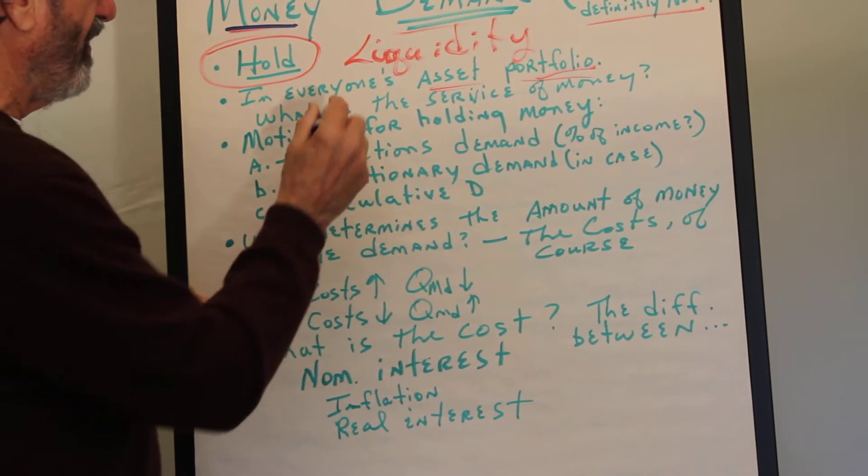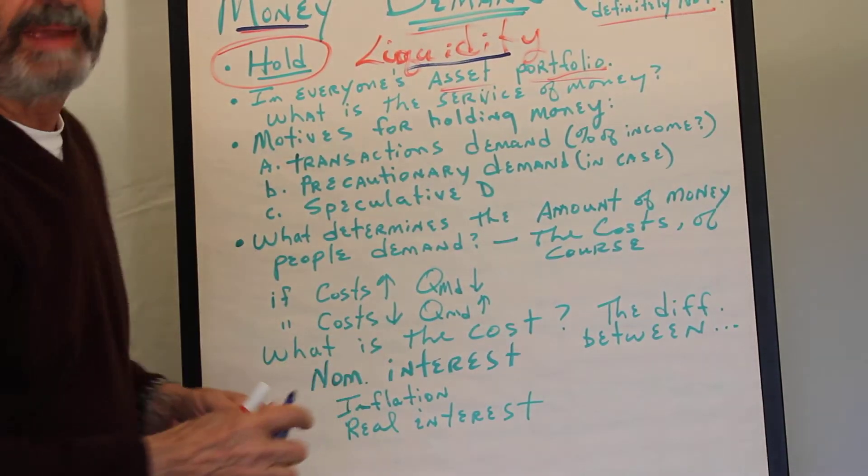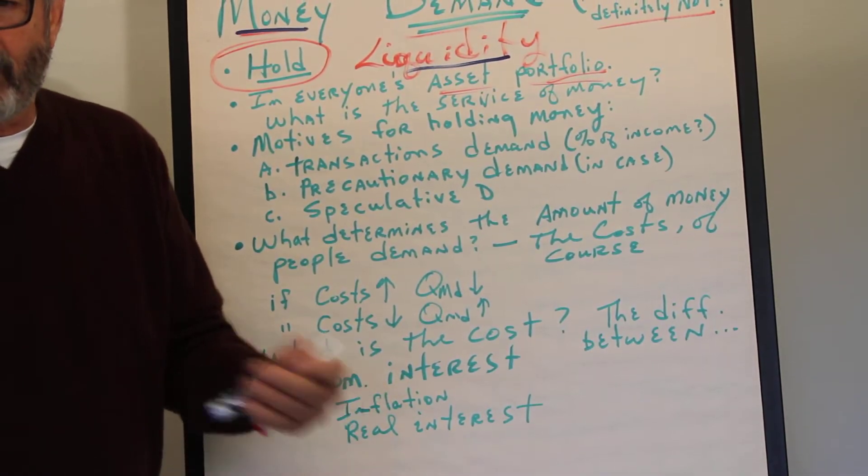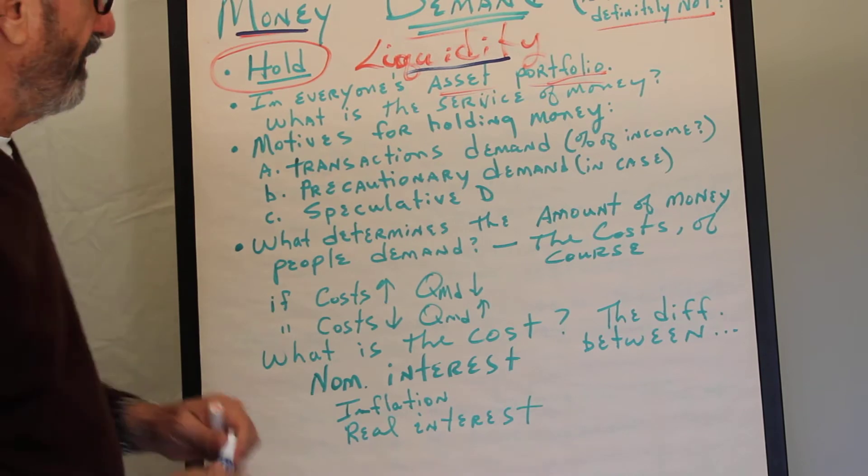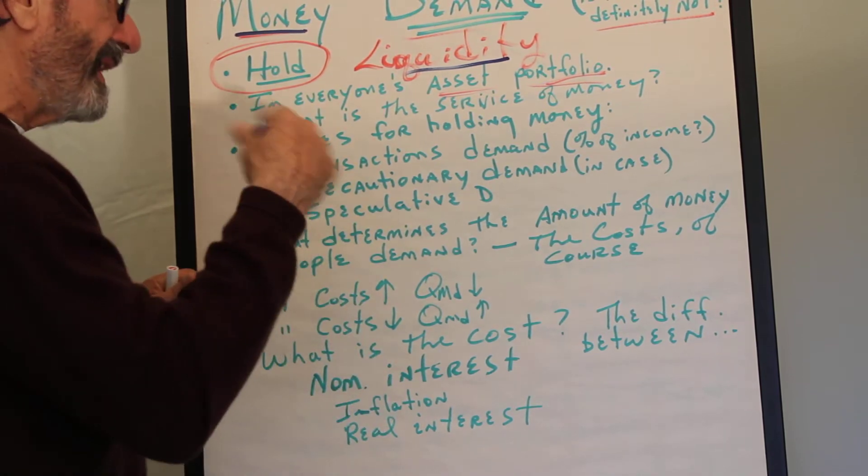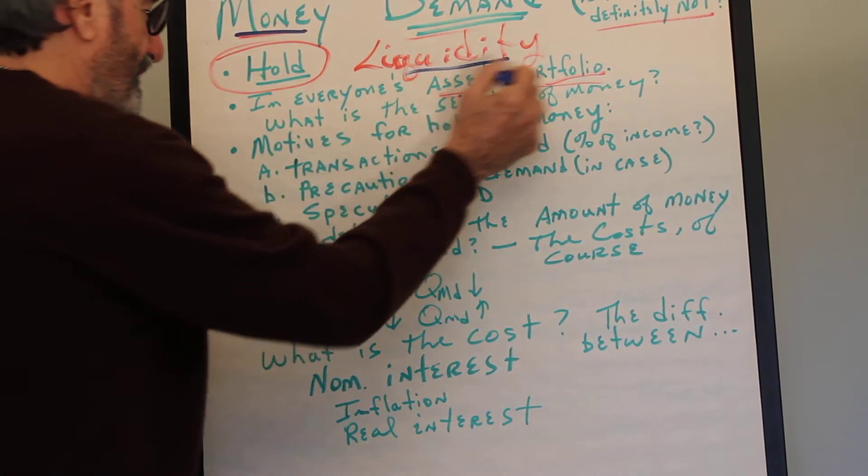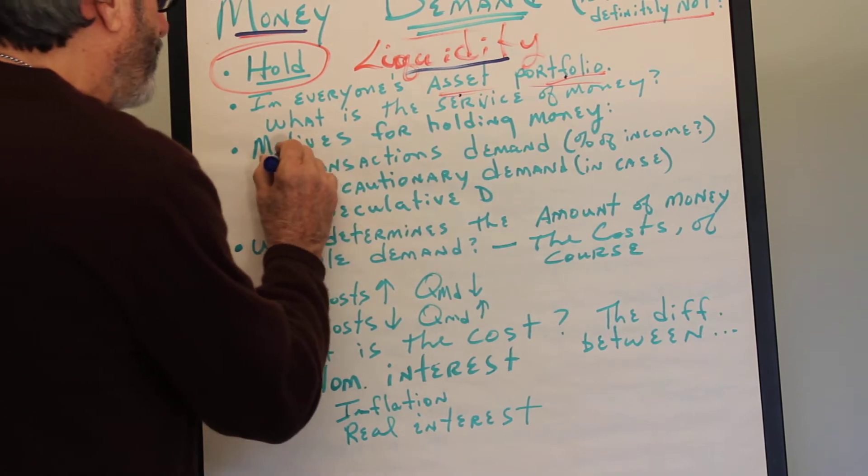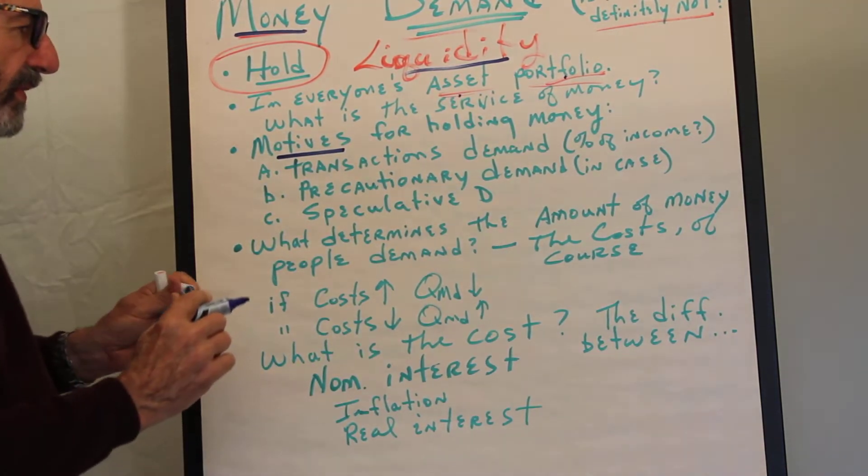Everyone's asset portfolio is liquidity. We need to make exchanges. Money is the tool for the job. That's the service that money performs. So that's why everybody keeps it in their asset portfolios. Why do people hold money? What are the motives for holding money?